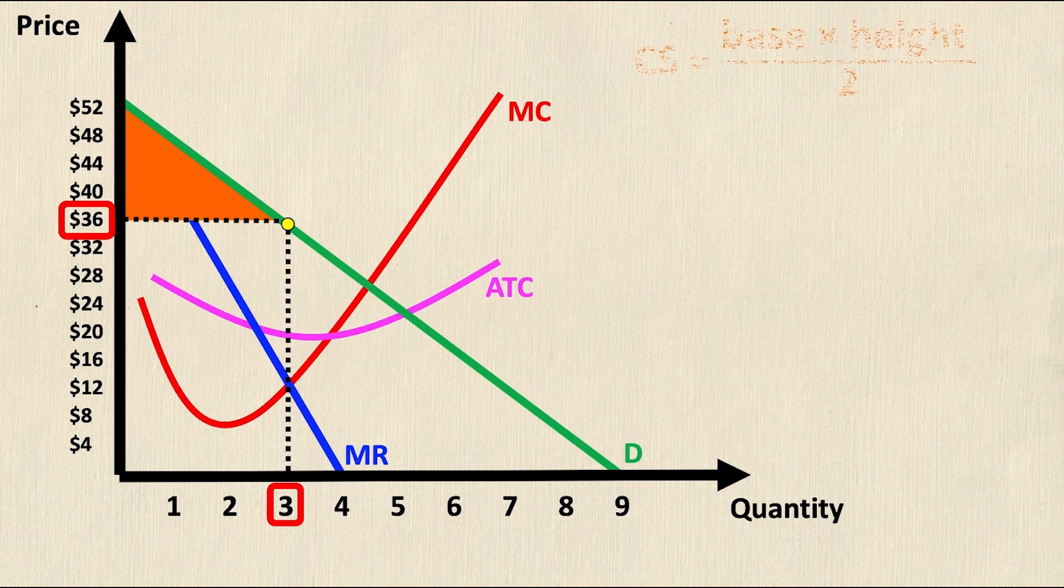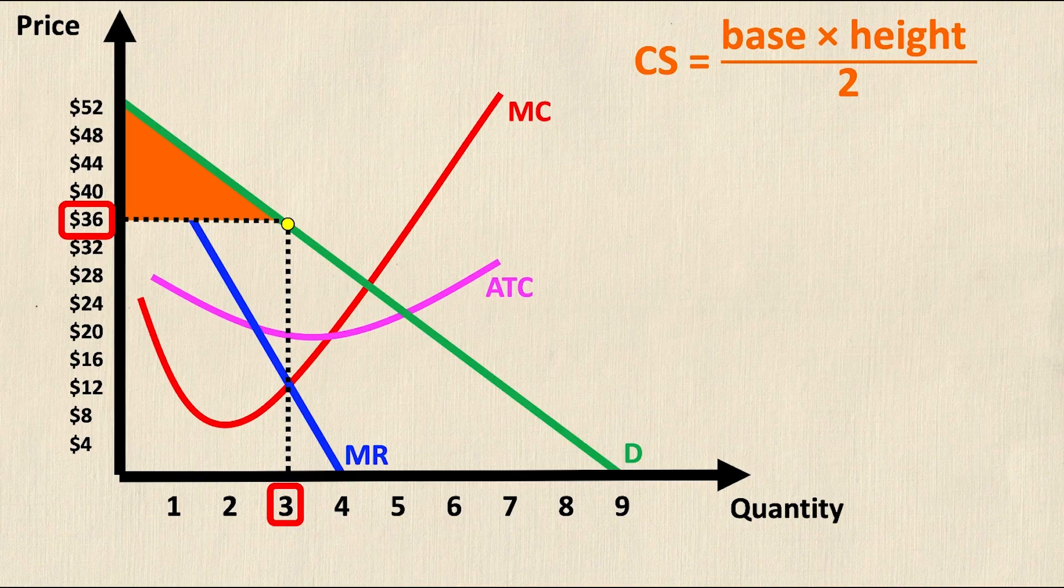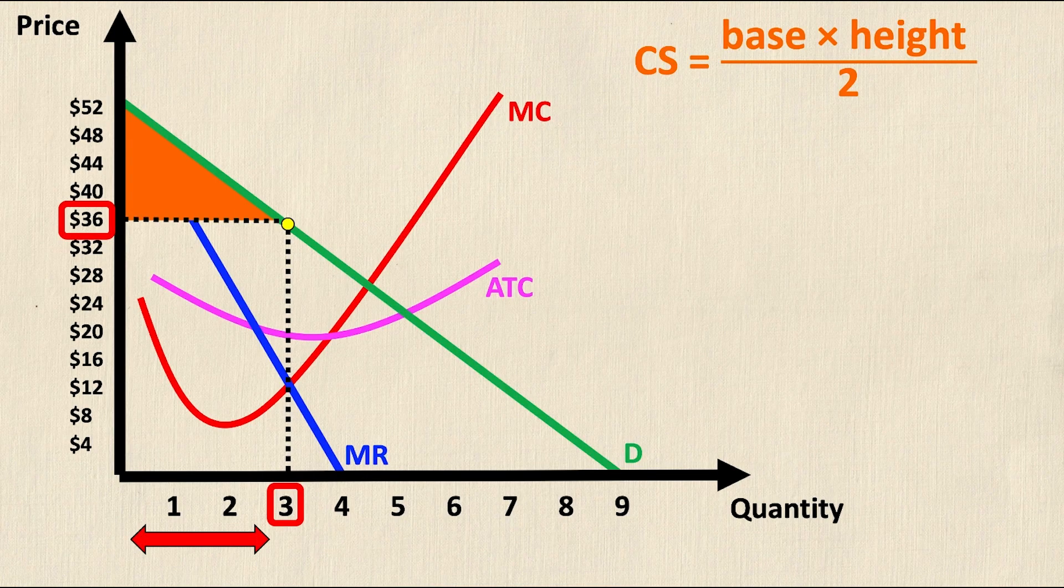Now that we've discovered this triangle all we need to do is calculate its area to get the consumer surplus. Remember that the area of a triangle is simply base times height divided by 2. Well the base of the triangle is easy, it's just 3, it's the quantity.